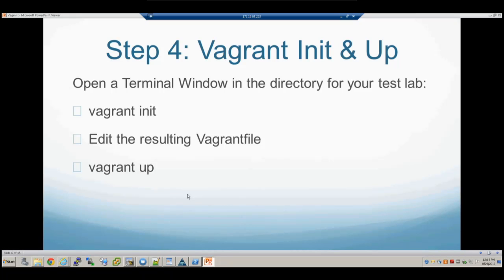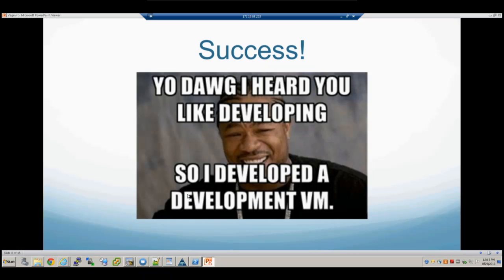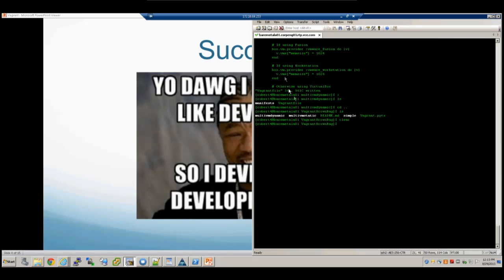Step four is pretty easy: you create a directory, move into it, and then run vagrant init. You edit the Vagrantfile that's created, and then you run vagrant up. All of a sudden you have your development environment up and running. Last but not least, you SSH to the VM that's created and you're able to do whatever development work you need to do. You've successfully got a development VM running within your development environment.